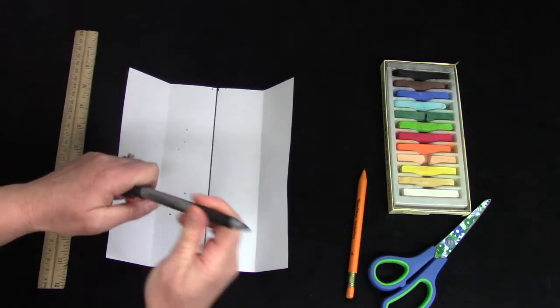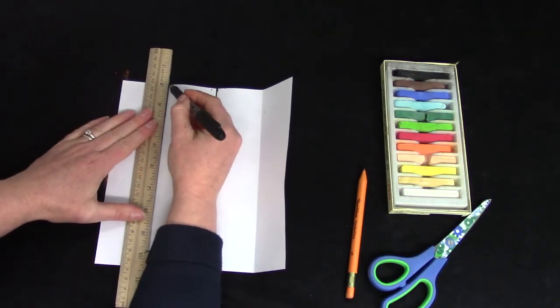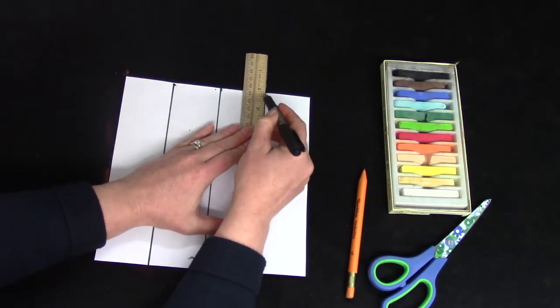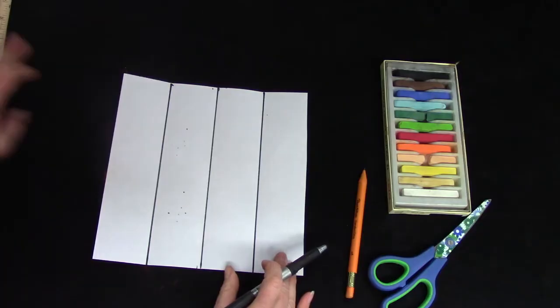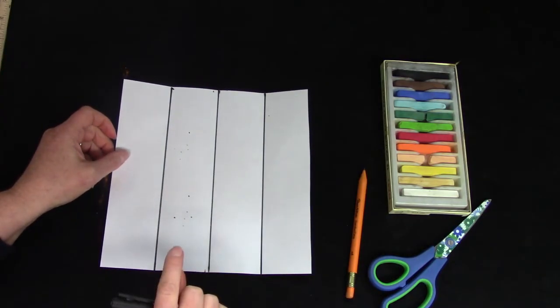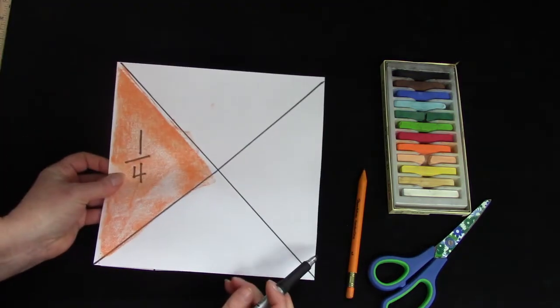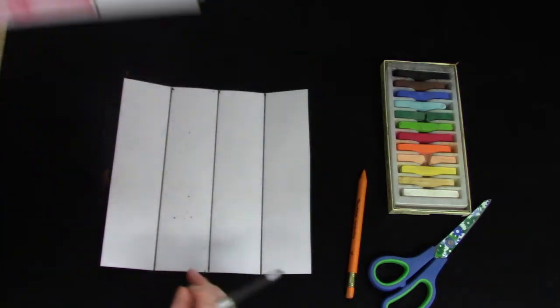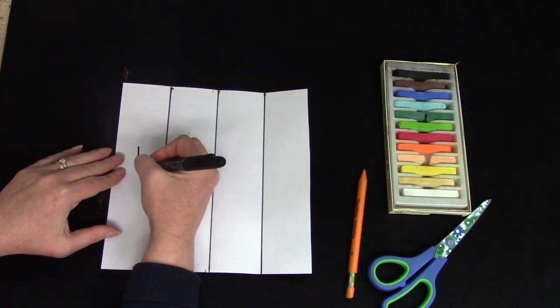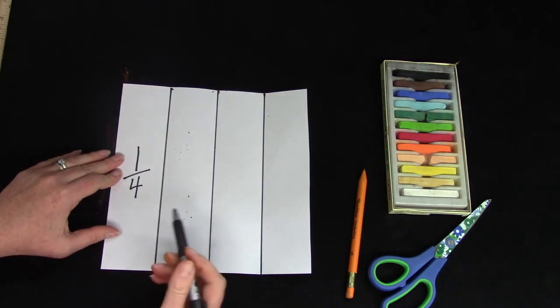Now I need to draw some lines so that you can see them. I'm holding my ruler very tightly so that it doesn't wiggle and make a squiggly line. Now I've divided my square into one, two, three, four rectangles. I have divided my square into triangles, into squares, and now I'm doing it in rectangles.